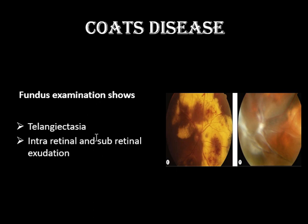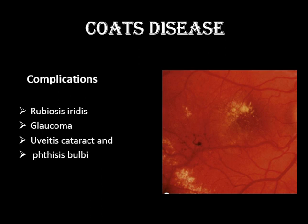On fundus examination, you see telangiectasia — aneurysmal dilatation of the capillaries at the macula and at the retinal periphery — along with intra-retinal and sub-retinal exudation. This is a late stage showing tractional retinal detachment, epiretinal fibrosis, and all associated complications. This is the most complicated stage of Coats disease leading to the white reflex. Parents often mistake this white reflex for cataract, leading to delayed management. This is a sight-threatening condition and patients usually lose vision very quickly.